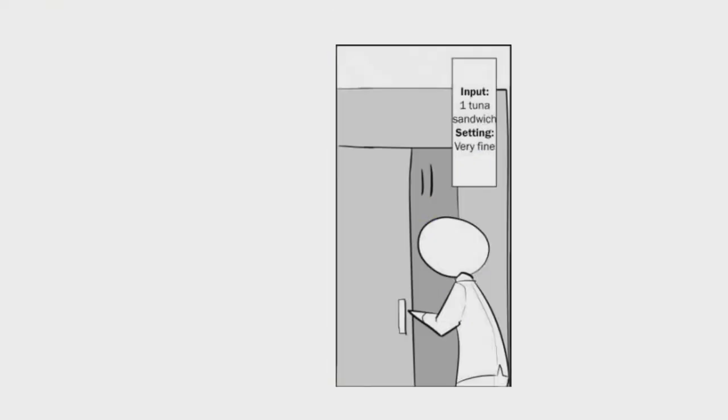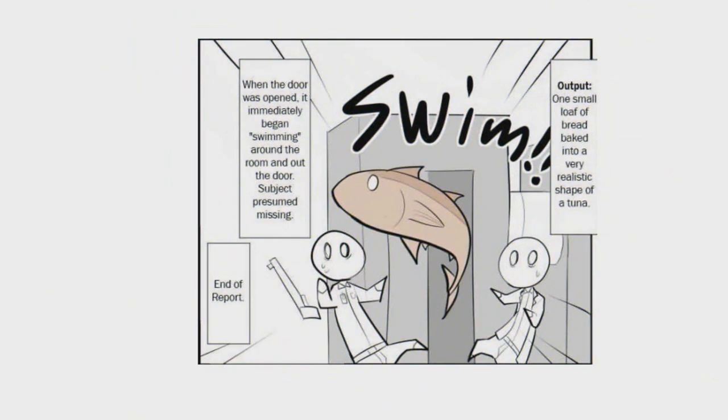Input: one tuna sandwich. Setting: very fine. Output: one small loaf of bread baked into a very realistic shape of a tuna. When the door was opened, it immediately began swimming around the room and out the door. Subject presumed missing. End of report. The loaf tuna is still on the loose and considered an unknown SCP at this point in time.